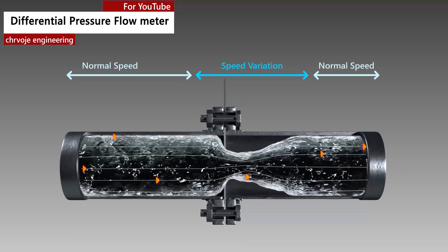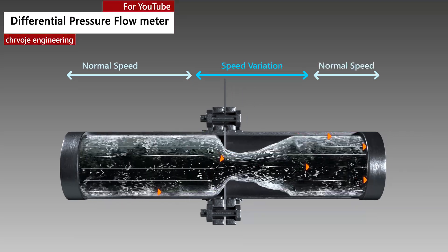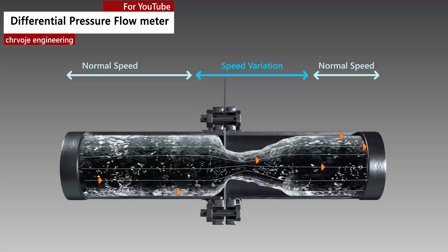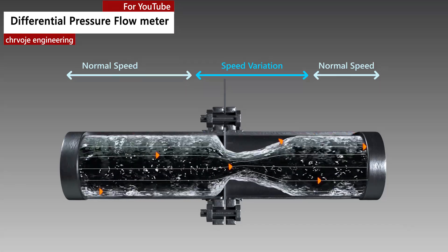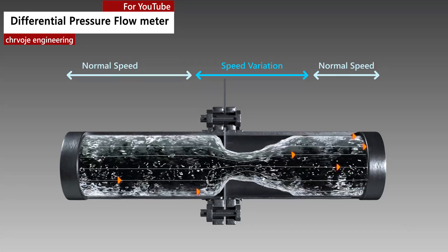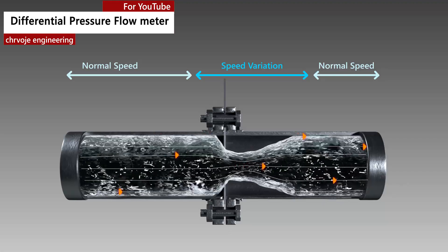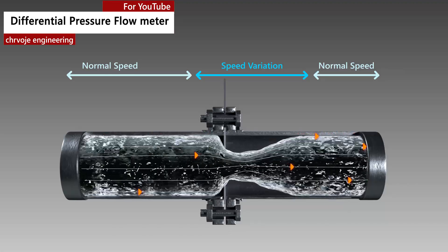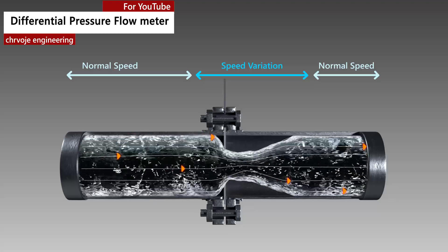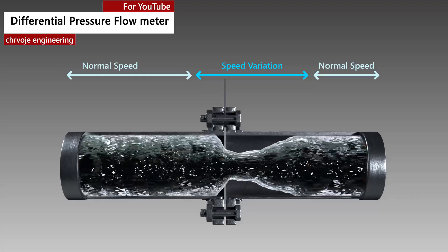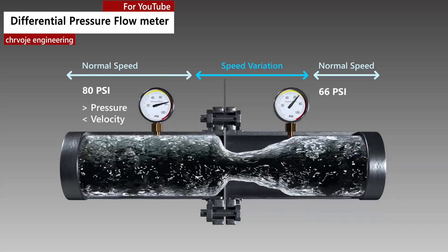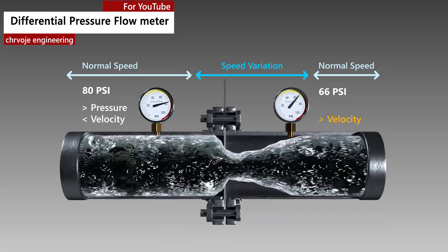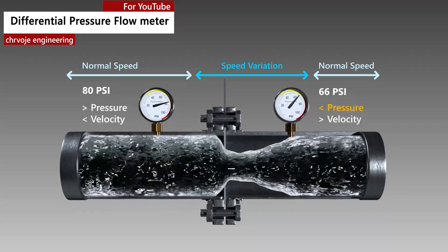According to the laws of conservation of energy, the fluid entering the pipe must equal the mass leaving the pipe during the same period of time. The velocity of the fluid leaving the orifice is greater than the velocity of the fluid entering the orifice plate. Applying Bernoulli's principle, the increased fluid velocity results in a decrease in pressure.